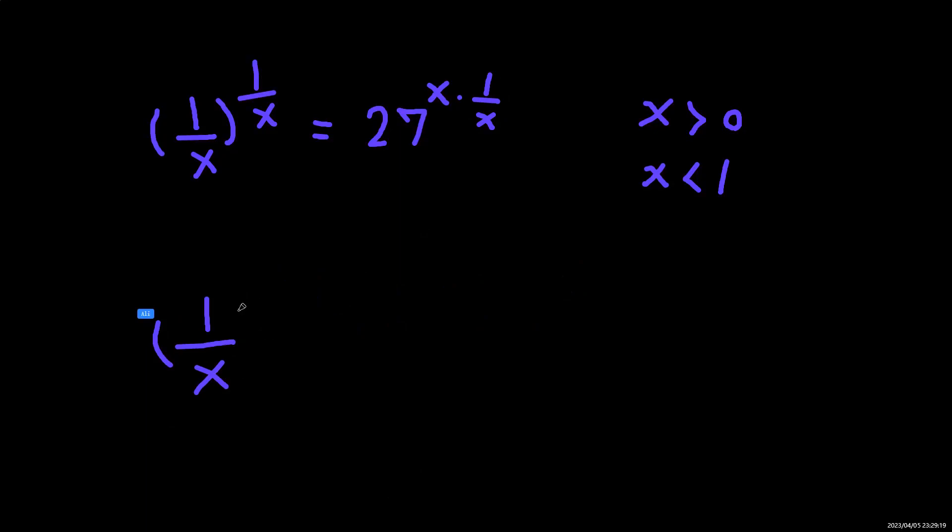So (1/x) to the power of (1/x) equals 27. And 27 we could write as 3 to the power of 3. So we will know from here that 1 over X will be 3.